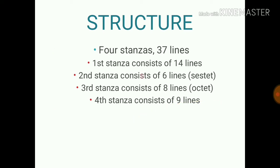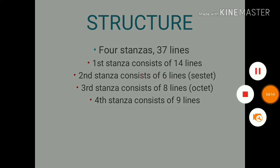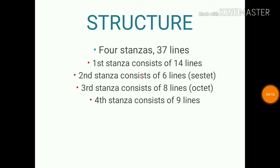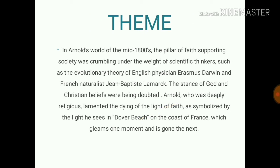The structure of the poem consists of four stanzas and 37 lines. The first stanza has 14 lines; the second stanza has six lines, making it a sestet; the third stanza has eight lines, making it an octet — similar to the sonnet structure; and the fourth stanza consists of nine lines.